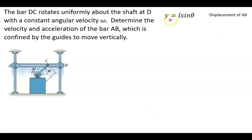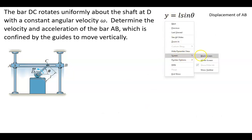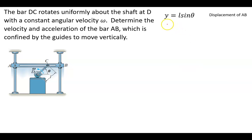So we've already established the displacement of Y in terms of the angular displacement, which is L — the length of the bar — times the sine of theta. That's one way we can describe the position of bar AB.